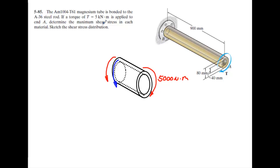You have an A36 steel rod, which is inside here, and you have a magnesium tube on the outer diameter that is actually bonded to the steel rod. The magnesium is an AM1004-T61 magnesium tube. There's a torque being applied down here. This torque is being applied of 5,000 Newton meters.